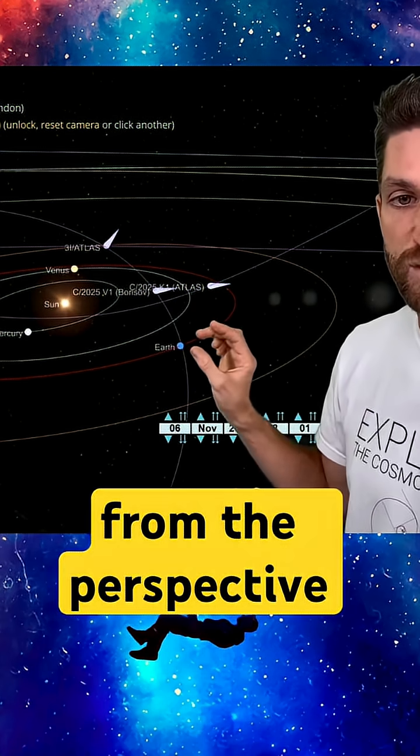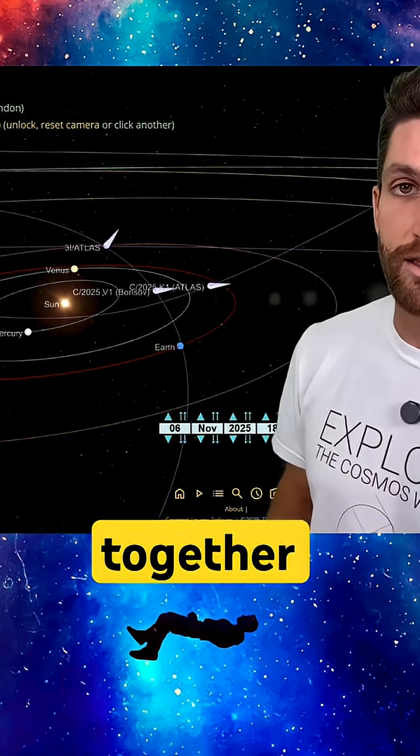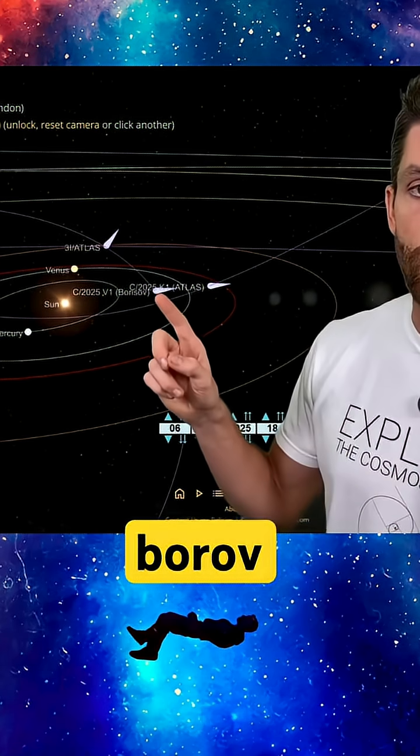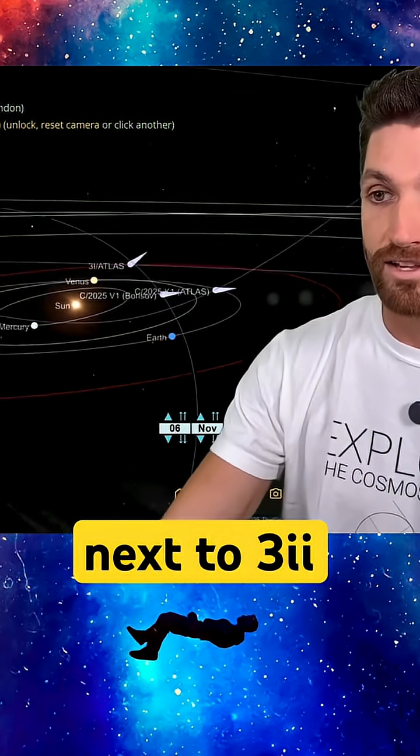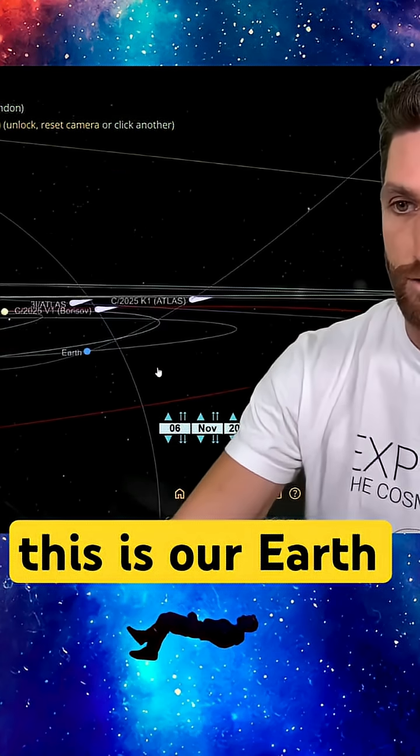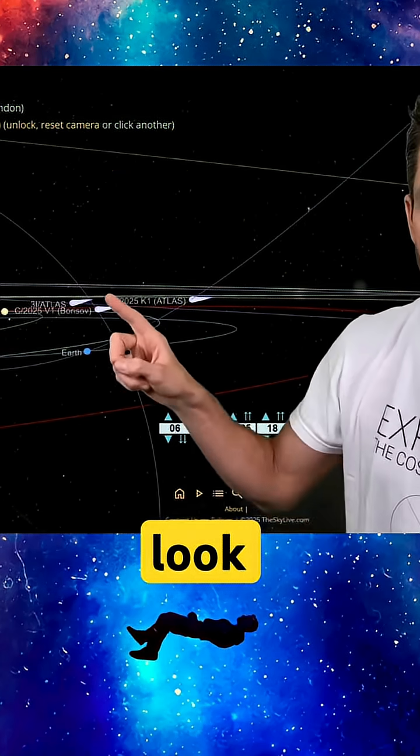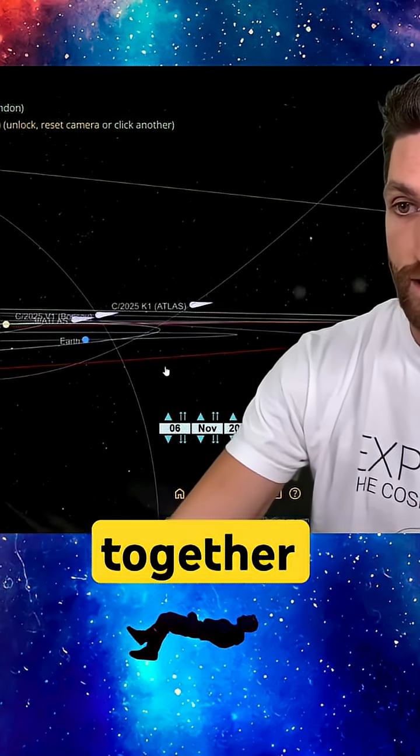All three of these, from the perspective of Earth, pretty close together in the night sky. So Borisov is found right next to 3i Atlas. This is our Earth right there in blue. Look how close together these are. Very close together.